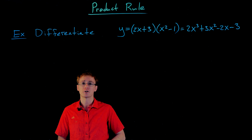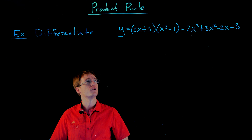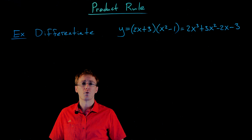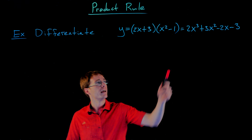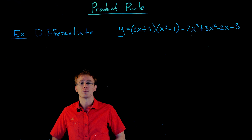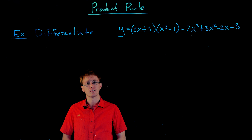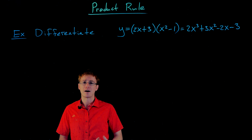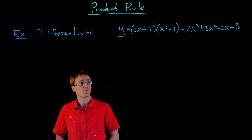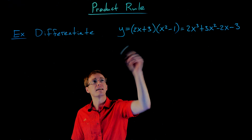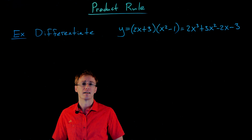Let's go ahead and differentiate this function. Here I have the function written in two different forms: a factored form, 2x plus 3 times x squared minus 1, and an expanded form to the right. We already know how to differentiate the expanded form using our power rule and sum and difference rule, so we'll know what the derivative should actually look like. We're going to try the incorrect product rule and see that the results are not the same.